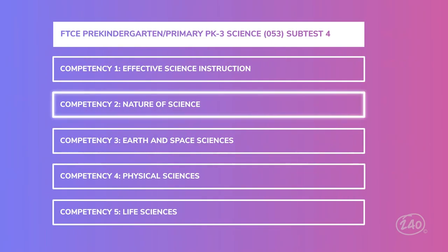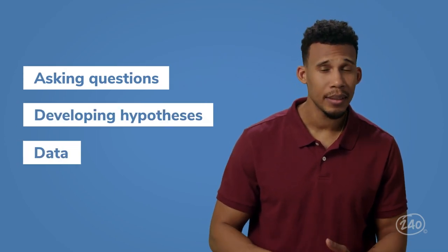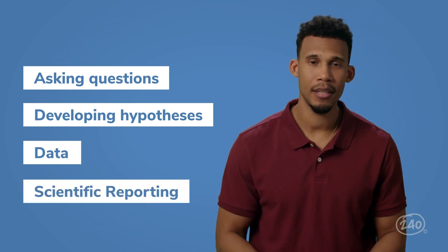Now that we've talked about best practices for teaching science, let's look at what you'll actually need to teach. Competency 2 is all about the nature of science — a common way to say general science skills and understandings that apply no matter what kind of science your students are studying. This includes big ideas like how science connects to other subjects and to life outside school, as well as asking questions, developing hypotheses, collecting, measuring, and analyzing data, and scientific reporting.